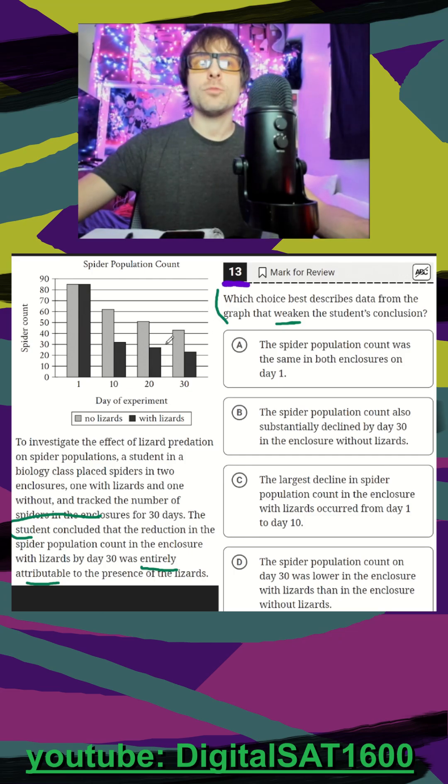And now we can finally look at our graph. We do see that the one with lizards is declining more substantially than the one without lizards. But if the reduction was entirely because of lizards, why am I still losing spiders in the ones without lizards?